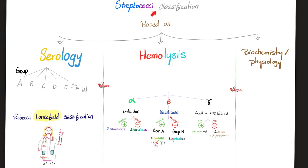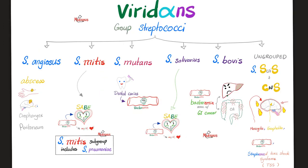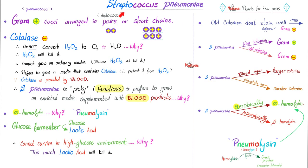As you recall, if it's a Streptococcus, we can classify it based on serology, hemolysis, or biochemical/physiological reactions. We're talking alpha-hemolytic today. Streptococcus pneumoniae is actually a subgroup within the Streptococcus mitis group, which is a subgroup of the very dense group Streptococci. Gram-positive cocci arranged in pairs (diplococci) or short chains — chain, therefore strept; the chain is made of spheres, coccus. This coccus can lead to pneumonia, so you can call it pneumococcus.